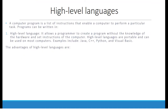A computer program is a list of instructions that enable a computer to perform a particular task. Programs can be written in high-level language, which allows a programmer to create a program without knowledge of the hardware and set instructions of the computer. High-level languages are portable and can be used on most computers. Examples include Java, C++, Python, and Visual Basic.